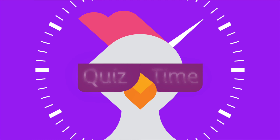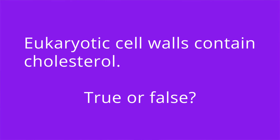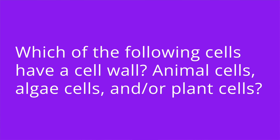All right, it's quiz time, and I have five questions for you. Question number one: Eukaryotic cell walls contain cholesterol. True or false? The answer is true. Question number two: Which of the following cells have a cell wall — animal cells, algae cells, and/or plant cells? The answer is algae and plant cells. Animal cells do not have a cell wall.